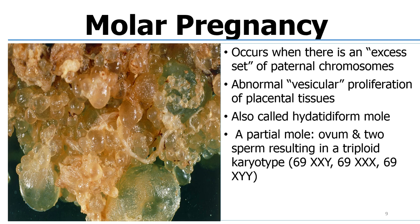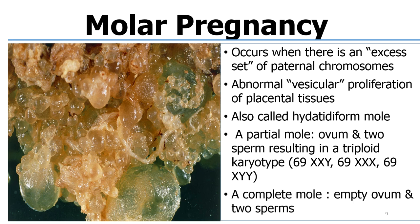It can either be partial or complete. The partial mole is where you have two sperms plus the ovum, giving a triploid karyotype: 69XXY, 69XXX, or 69XYY. For a complete mole, you actually don't have any ovum at all — there is an empty ovum with two sperms, and that is what you call a complete mole.